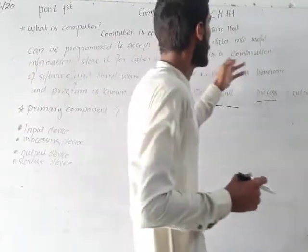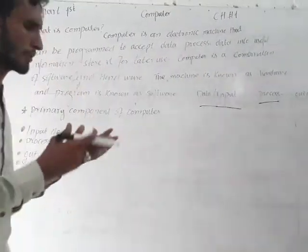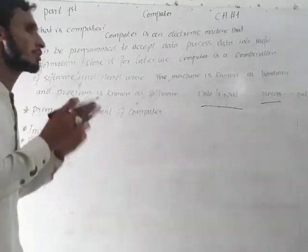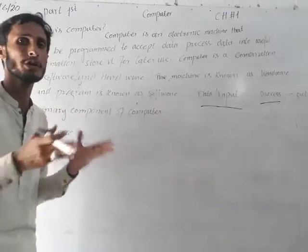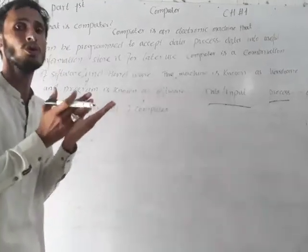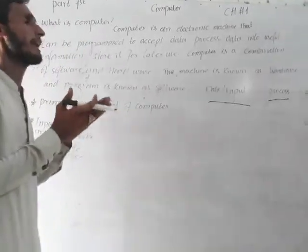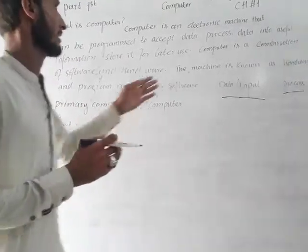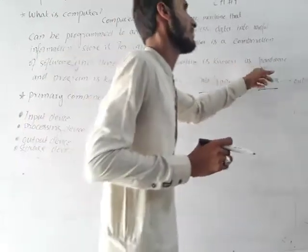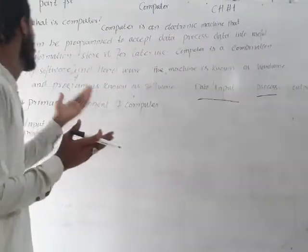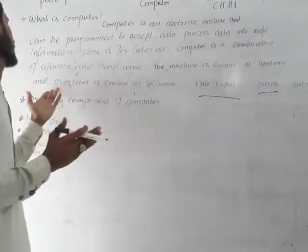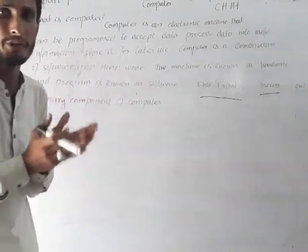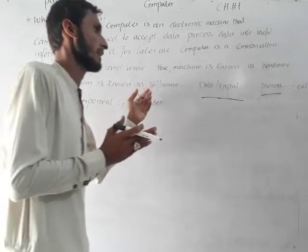Computers are the combination of software and hardware. A computer needs both software and hardware to work. Without either software or hardware, the computer cannot function. The machine part is known as hardware, and the programs are known as software.